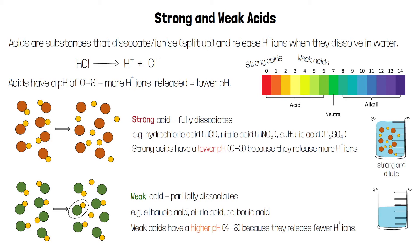Similarly, an acid can be both weak and concentrated, because a weak acid can be dissolved in a small volume of water. This means it's very concentrated, but it still only releases some of its hydrogen ions, so it's still known as a weak acid.